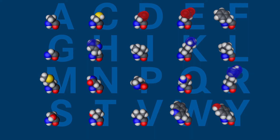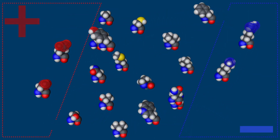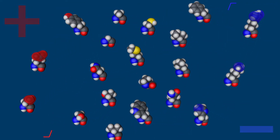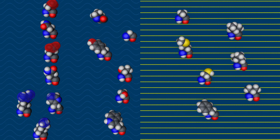Proteins consist of 20 different building blocks, the amino acids. They all have different properties.